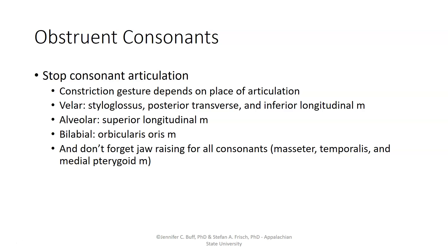Switching to stop consonants and starting with articulation, we again have a constriction gesture — in this case a stop closure that depends on place of articulation. For velar stops, the styloglossus and posterior transverse muscles raise the tongue body toward the posterior hard palate or soft palate, while the inferior longitudinal muscle keeps the tongue tip from contacting the alveolar ridge. For alveolar stops, the superior longitudinal muscle is the primary articulator, raising the tongue tip to make closure against the alveolar ridge. For bilabial stops, the orbicularis oris brings the two lips together. For all these articulations, jaw raising also contributes to making the constriction or closure gesture easier.